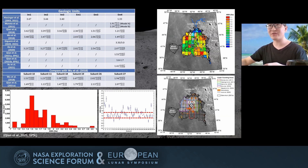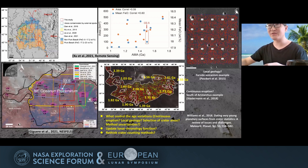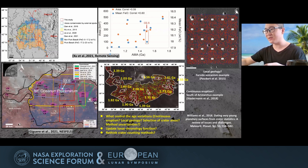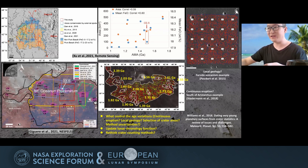The good news is that results from all authors are within the Eratosthenian epoch and are younger than all Apollo and Luna samples. Other authors also dated small areas within this unit and gathered different ages, finding age variations as well. So what causes the age variations within this unit? Is it due to continuous eruption, local geology, the selection of counting areas, method uncertainties, the need to update the lunar crater production function in the young time frame, or rethinking crater counting methods?